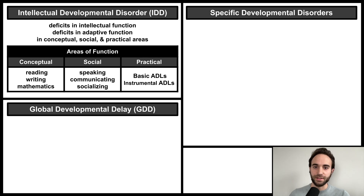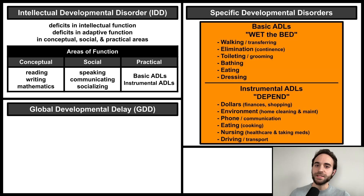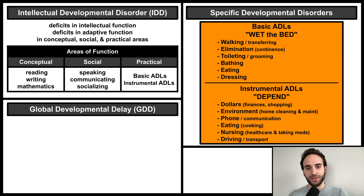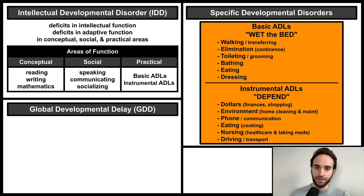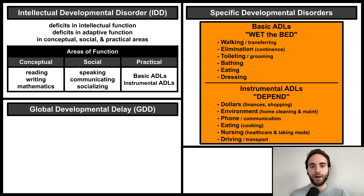The social area includes speaking, communicating, and socializing. And the practical area includes basic and instrumental ADLs. Basic and instrumental ADLs can be remembered with the mnemonics 'Wet the Bed' and 'DEPEND.' Basic ADLs are basic self-care tasks, while instrumental ADLs are more advanced tasks required to maintain an independent home.